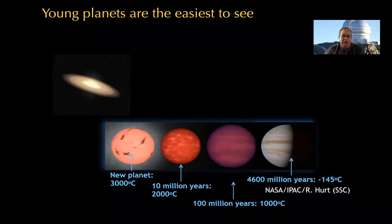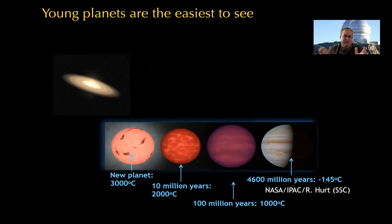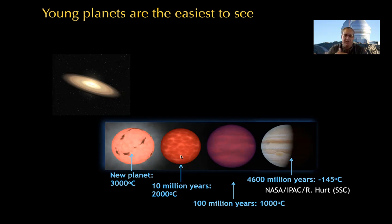What we can do from the ground is the somewhat easier process of looking for young planets — not in reflected light, but in thermal emission. When a planet forms, it's very hot. All the energy of the material that made the planet has to go somewhere — it makes the planet very hot, luminous, and bright. The planet then cools down over time. If you look in the infrared, contrast ratios are a lot more favorable. For systems younger than a few hundred million years, the amount of thermal emission is very significant, making it feasible to detect these planets in the glare of the star.